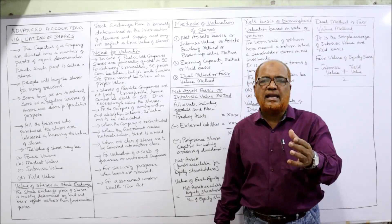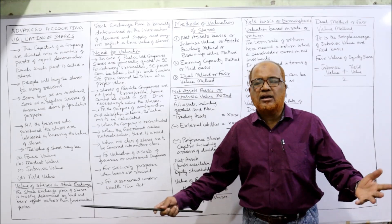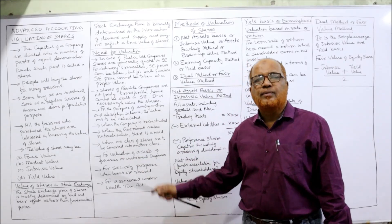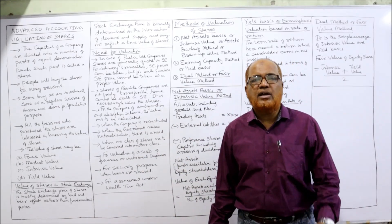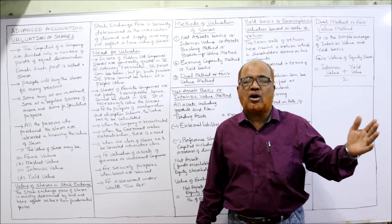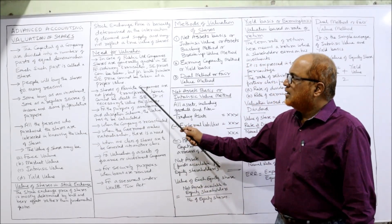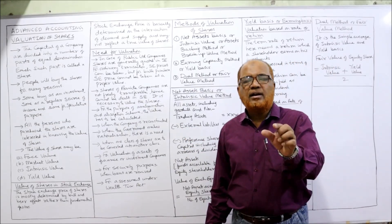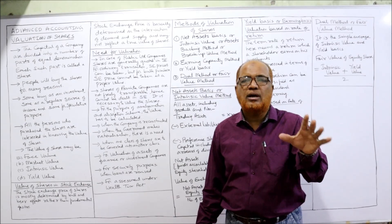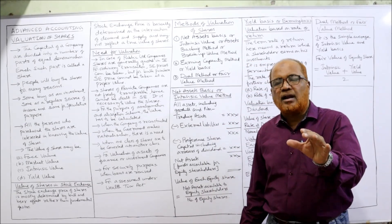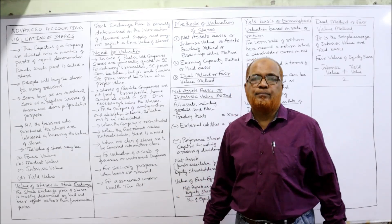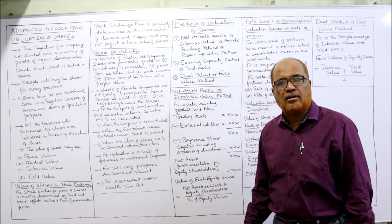When buying shares in bulk or large quantities, the market price is not reliable because it is fixed by the market and does not depend on the actual worth of the company. Private limited companies are those whose shares are not freely traded in the market — they are not freely negotiable. The shares can only be transferred based on certain conditions, so there is a need to determine the value of shares of a private company.